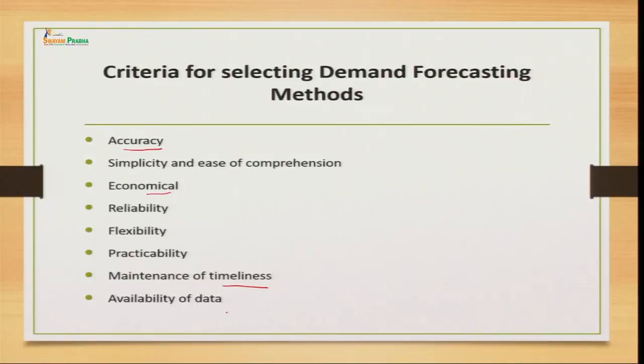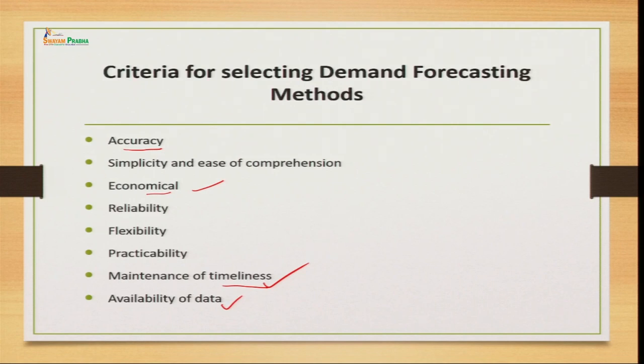Eighth is availability of data - some methods are based on past and previous data, so if that data is not available to you, applying those techniques will be a problem. You have to see whether the data is available for making those methods possible. These are the criteria to consider before selecting a forecasting technique. It is not possible to satisfy all criteria simultaneously - you prioritize based on what is most important, such as economical consideration, timeliness, and data availability.